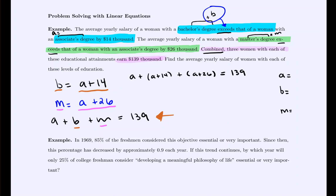And then at this point, it's just like our previous section. We simplify each side and then solve for the variable. So A plus A plus A is 3A, 14 plus 26 is 40, and that's what's equal to 139. Now take a moment to pause the video and solve for A. Unpause to check your work.